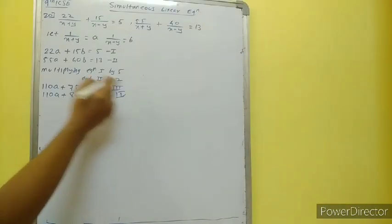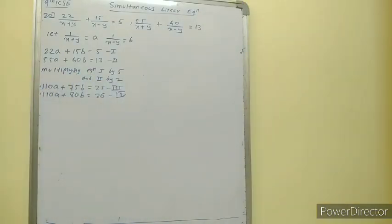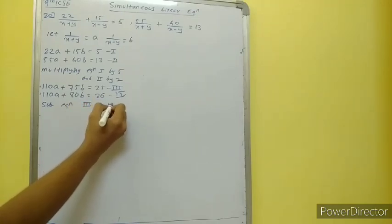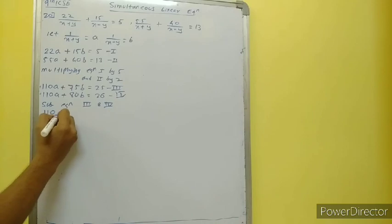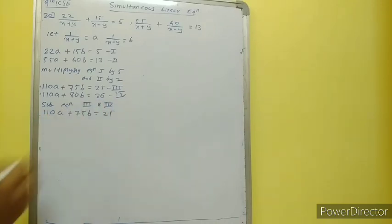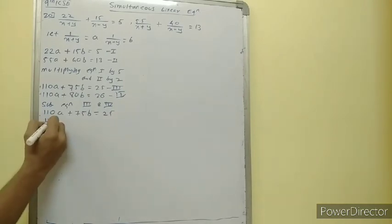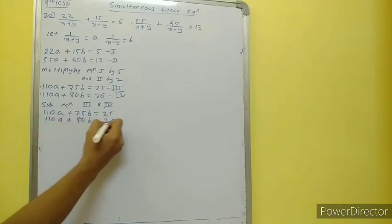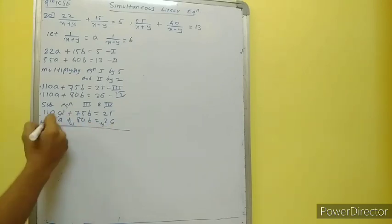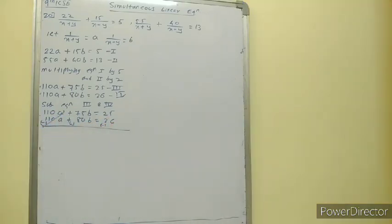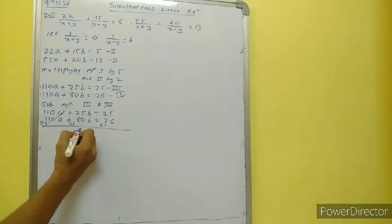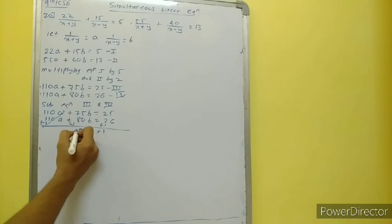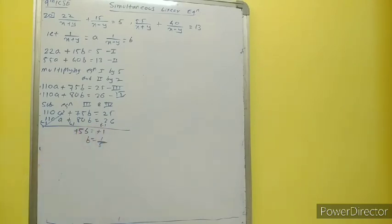Now we have plus signs for both — so we can subtract them. Subtracting equation 3 and 4: 110a plus 75b is equal to 25, minus 110a plus 80b is equal to 26. The 110a cancels. As we are subtracting, signs will change: 80 minus 75 is 5b, and minus 26 plus 25 is minus 1. Minus minus cancel, so b is equal to 1 upon 5.